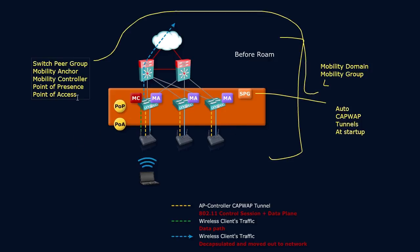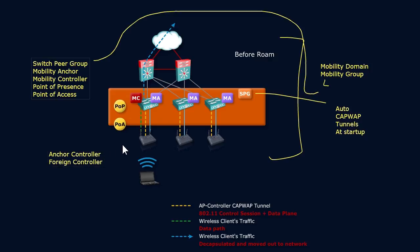When we talk about the point of presence or the point of access, we can also talk about the foreign and anchor controllers. I want you to tell me: what do we associate with what? In other words, the anchor controller and the foreign controller are associated with which key concepts — point of presence or point of access? Connect those two to each other. Pause, and then we'll discuss it.